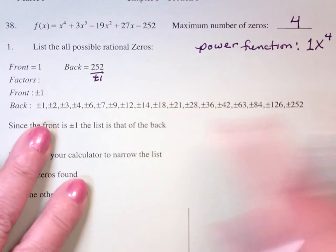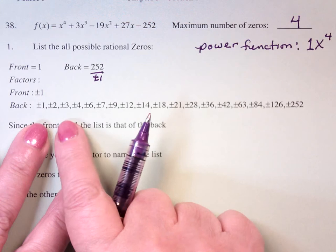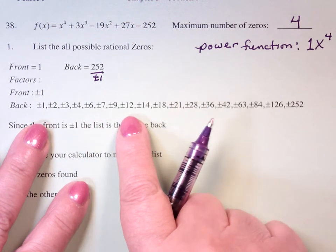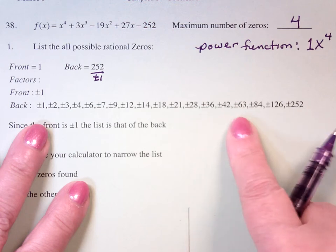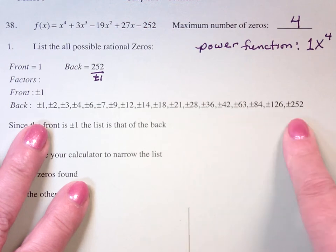But look how many there are. 1, 2, 3, 4, 6, 7, 9, 12, 14, 18, 21, 28, 36, 42, 63, 84, 126, 252.